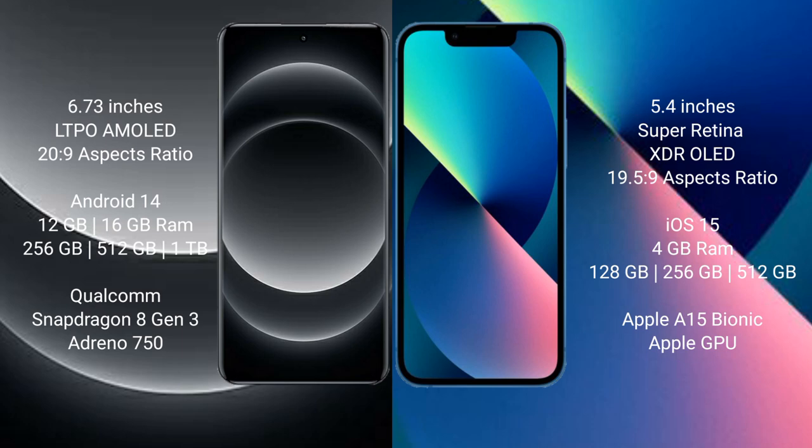The Xiaomi 14 Ultra comes with 12GB or 16GB RAM and 256GB, 512GB, or 1TB internal storage, with a Qualcomm Snapdragon 8 Gen 3 processor. The iPhone 13 Mini comes with 4GB RAM and 128GB or 256GB internal storage, with an Apple A15 Bionic processor and GPU.